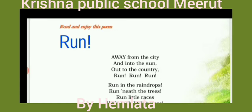In this poem, the poet expresses their views about running fast. The poet is telling the children how we should run — from the city to the country, and beyond. Just as the sun moves and runs, we should run in the same way.